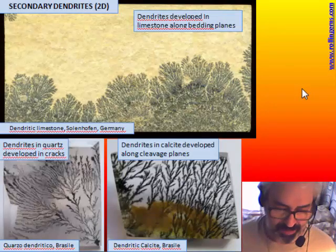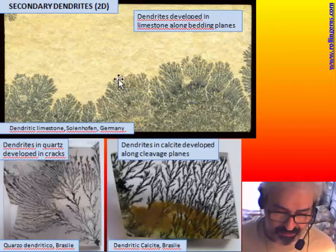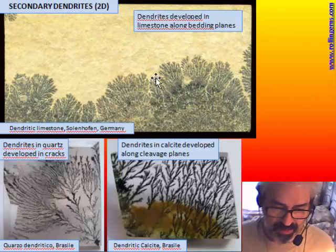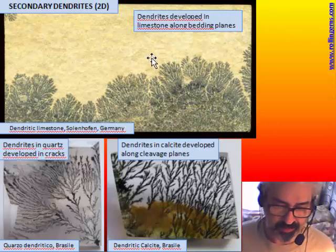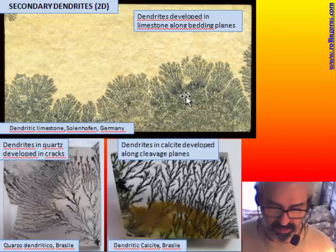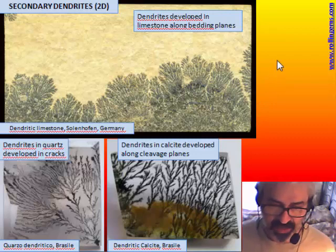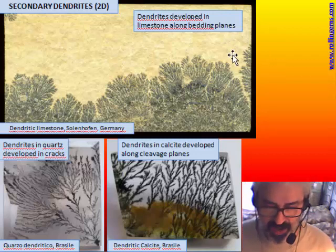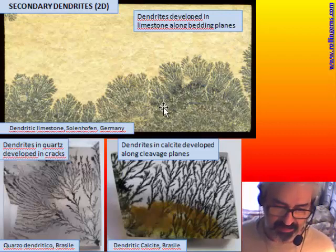The typical secondary dendrite is common in many rocks. Very famous are the dendrites in limestone from the Solnhofen quarry in Germany, where they grow along bedding planes. The stratification of the limestone is horizontal, and it is famous for fossil fish, crabs, and many animals — and in the same planes we can find the manganese dendrites.